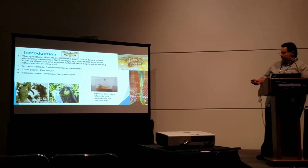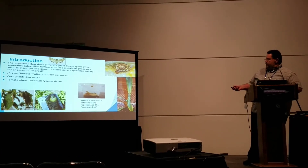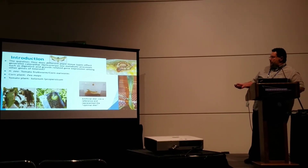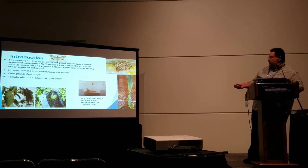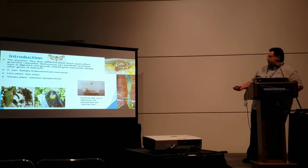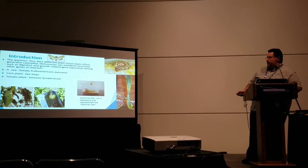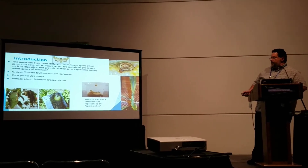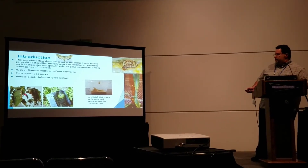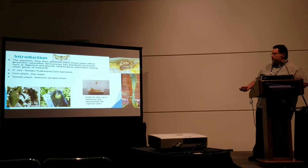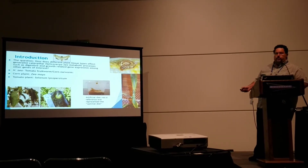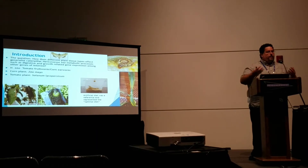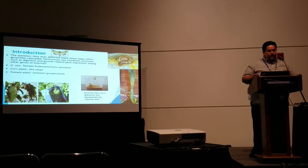We're looking at this caterpillar and how it has to deal with feeding on different types of plants as well as different types of tissues — feeding on silk, fruit, and leaves on corn, and on tomato fruit and tomato leaves. That's the summary of what I'm going to focus on in this particular study, comparing it to caterpillars feeding on an artificial diet, which we consider the reference or optimal diet. The plant-based diets will have a lot of plant defenses and things like that.